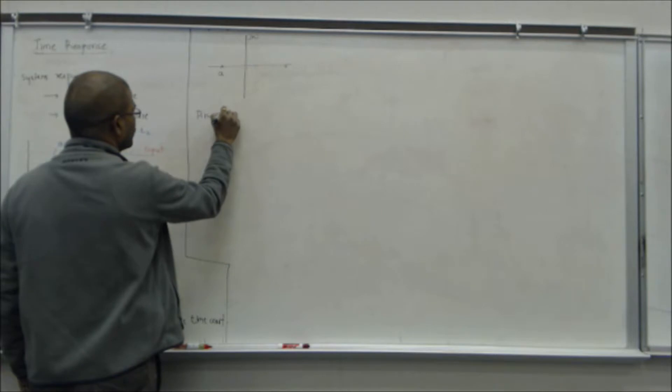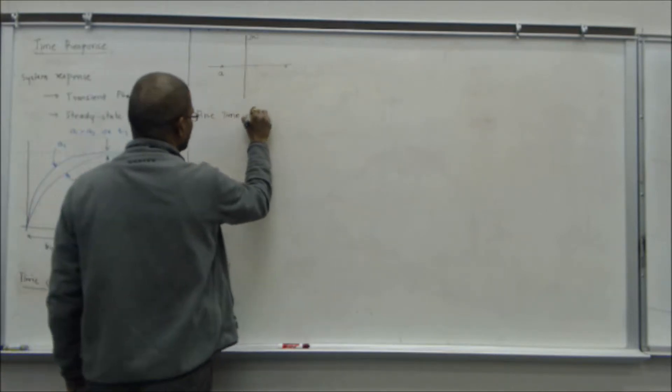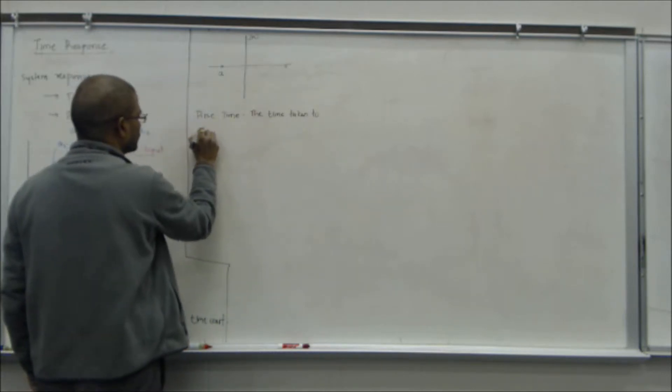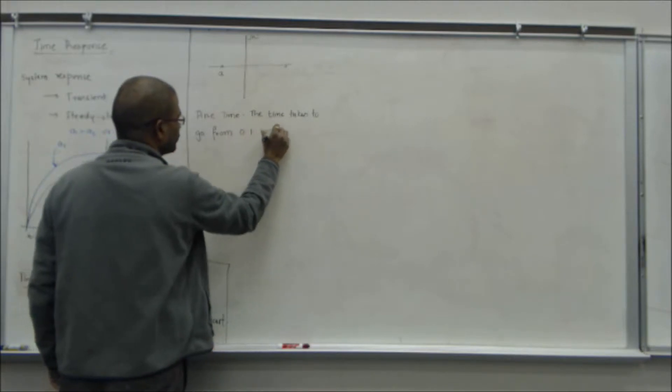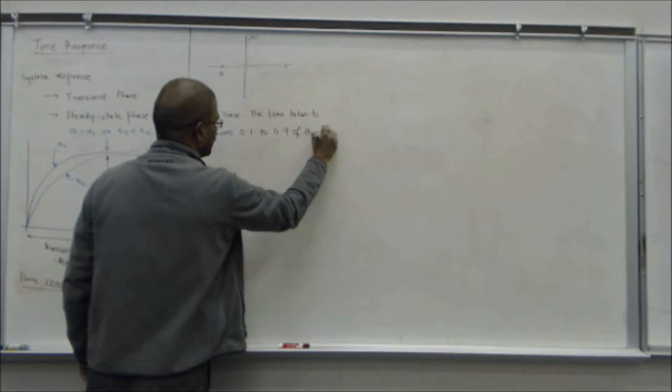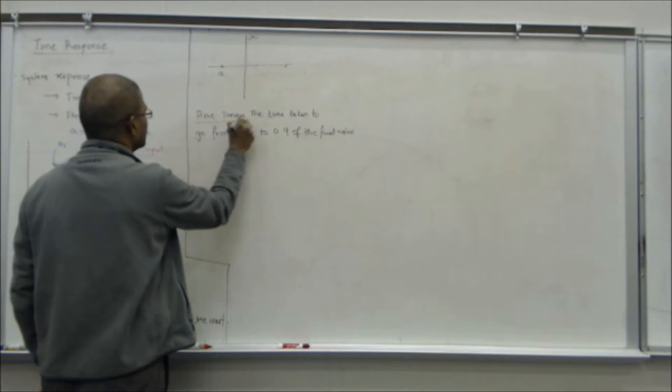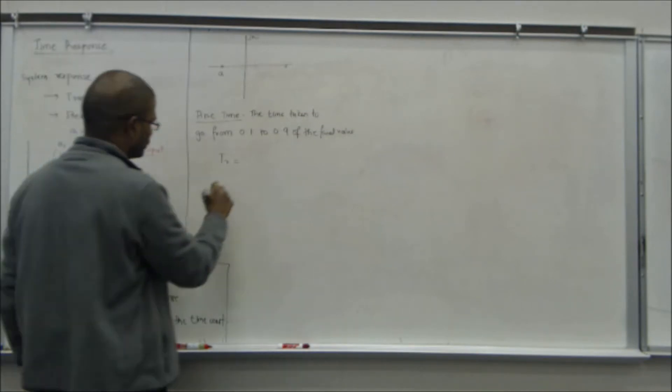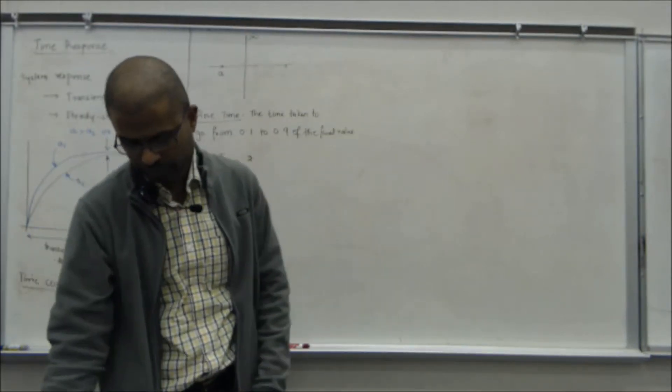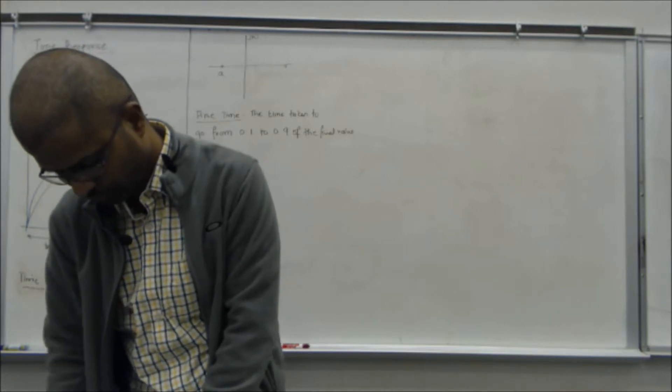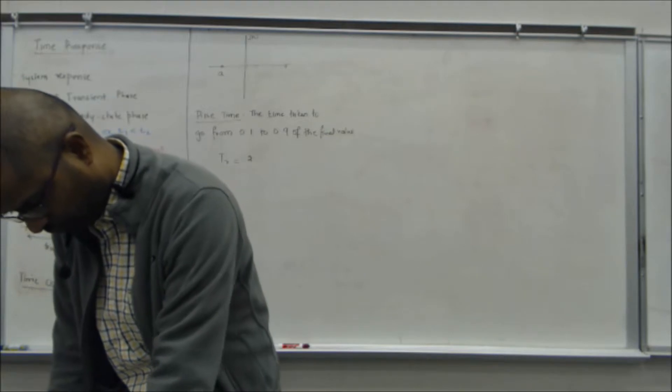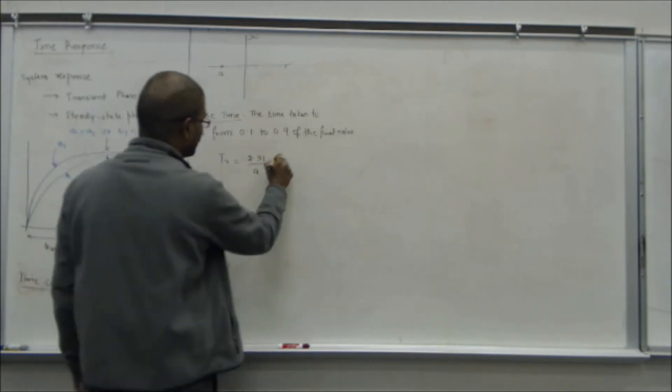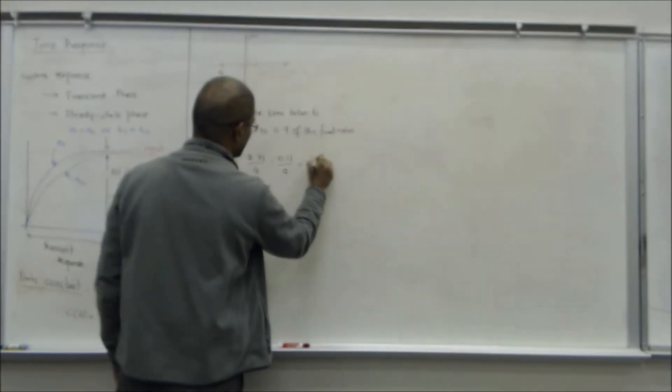There is something called rise time. This is defined as the time taken to go from 0.1 to 0.9 of the final value. So TR is equal to 2.2 over A.